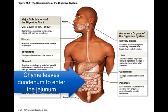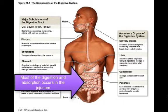The chyme leaves the duodenum to enter the second portion of the small intestine, the jejunum. The chyme and all digestive enzymes will have plenty of time to digest the macromolecules as it travels through the 8 feet of jejunum, and there is also plenty of time for major absorption of the breakdown products. Most of the digestion and absorption in the digestive system occurs in the jejunum.